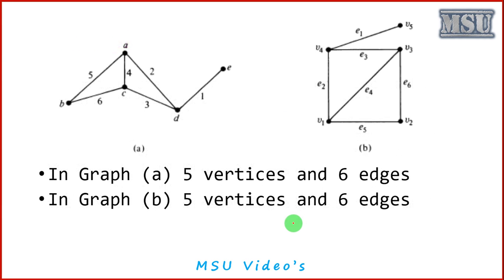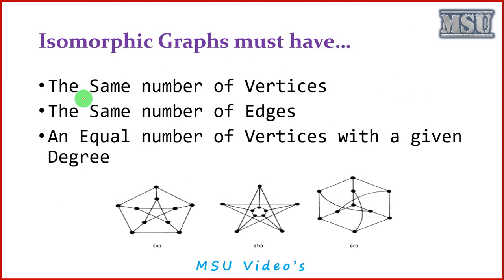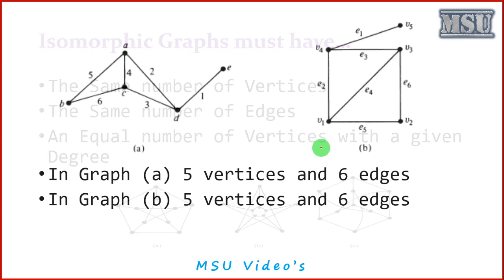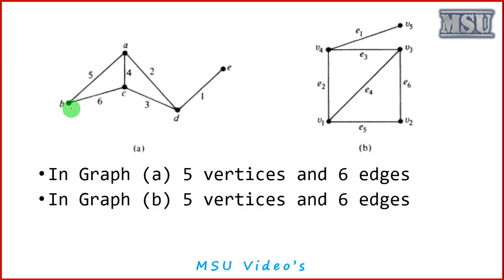Let us discuss with an example. Consider graph A and graph B. In graph A, the first and foremost condition to check is number of vertices — it has five vertices and six edges. Graph B also has five vertices and six edges. So there is a possibility these two graphs may be isomorphic. The same number of vertices, same number of edges, and equal number of vertices with a given degree value. Here vertex B has degree value 2, vertex A has degree value 3, vertex C has degree value 3, vertex D has degree value 3, and E has degree value 1.